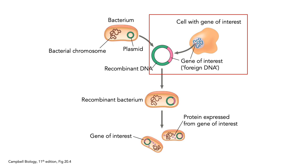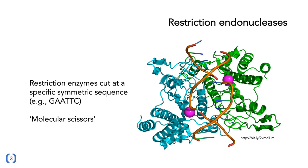Let's look at how you get your gene of interest inserted into a plasmid vector. We do this using restriction endonucleases — we saw these in the last presentation. A restriction enzyme, or restriction endonuclease — the terms are the same — cuts at a specific symmetric sequence, such as GAATTC. You can think of them effectively as molecular scissors.